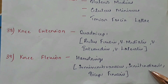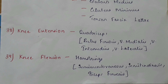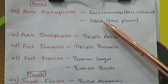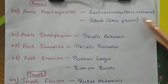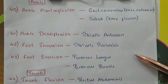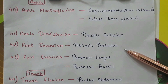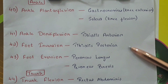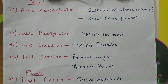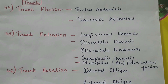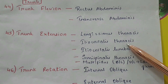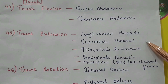Knee flexion by the hamstrings, which includes semimembranosus, semitendinosus, and biceps femoris. Ankle plantar flexion by the gastrocnemius muscle in knee extension and the soleus muscle when the knee is flexed. Ankle dorsiflexion by the tibialis anterior. Foot inversion by tibialis posterior. Foot eversion by peroneus longus and peroneus brevis. Trunk flexion by rectus abdominis and transverse abdominis.